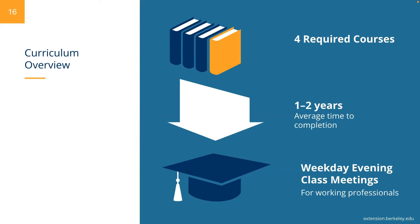Let's turn our attention towards earning this certificate. You'll need to complete all four of the required courses, which are three semester units each, with a minimum of a 3.0 GPA, and do so within a five-year span. You might be wondering how much time you'll be spending on your studies.